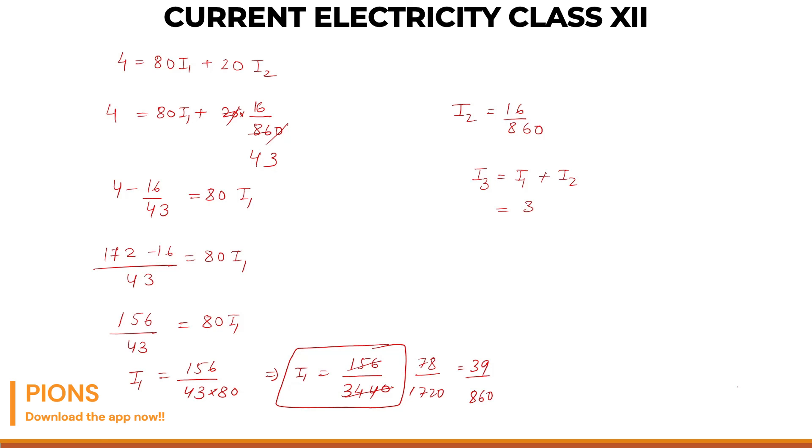So I1 is 39 by 860 and I2 is 16 by 860. So when you add 9, 6, 15, 1, 3, 1, 4, 5, 55 by 860. Now it's better. I3 is this.